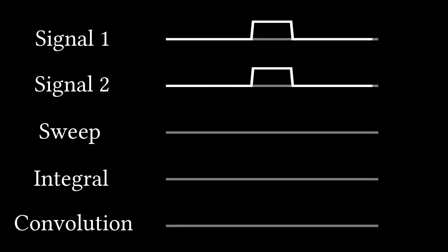First, we take two signals, then we flip the second one and pass it through the first and integrate their multiplied output. That integral at every time step is the convolution.